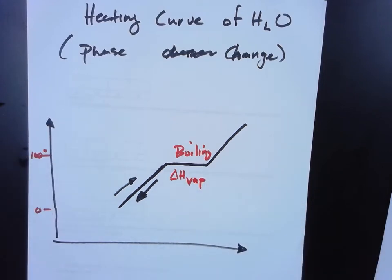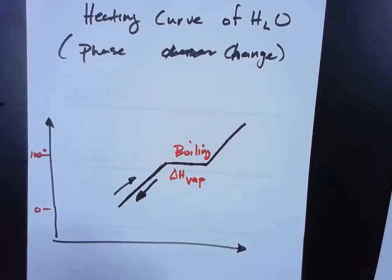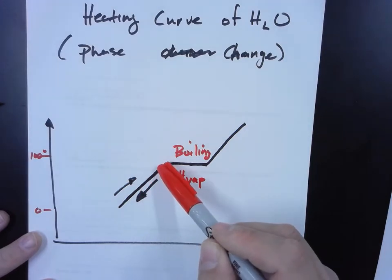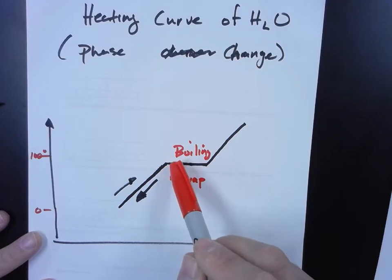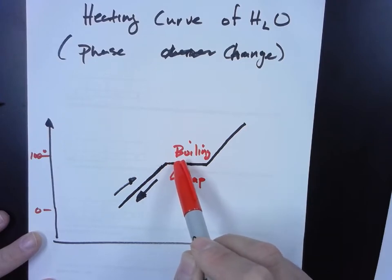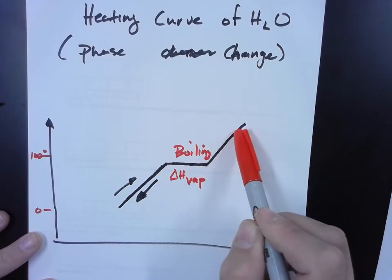And that's called delta H vaporization. I'm going to give you what that value is later on, but right now I just want you to get this concept down: that as you increase energy, you're going to get water that eventually starts to boil once it hits that boiling point, or the point of vaporization.